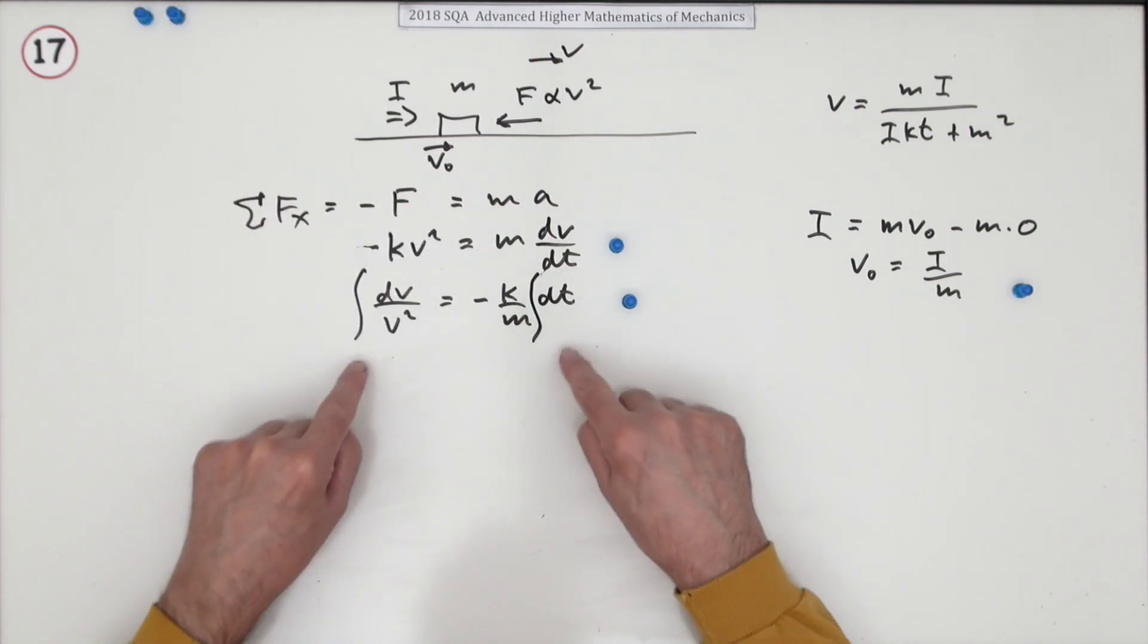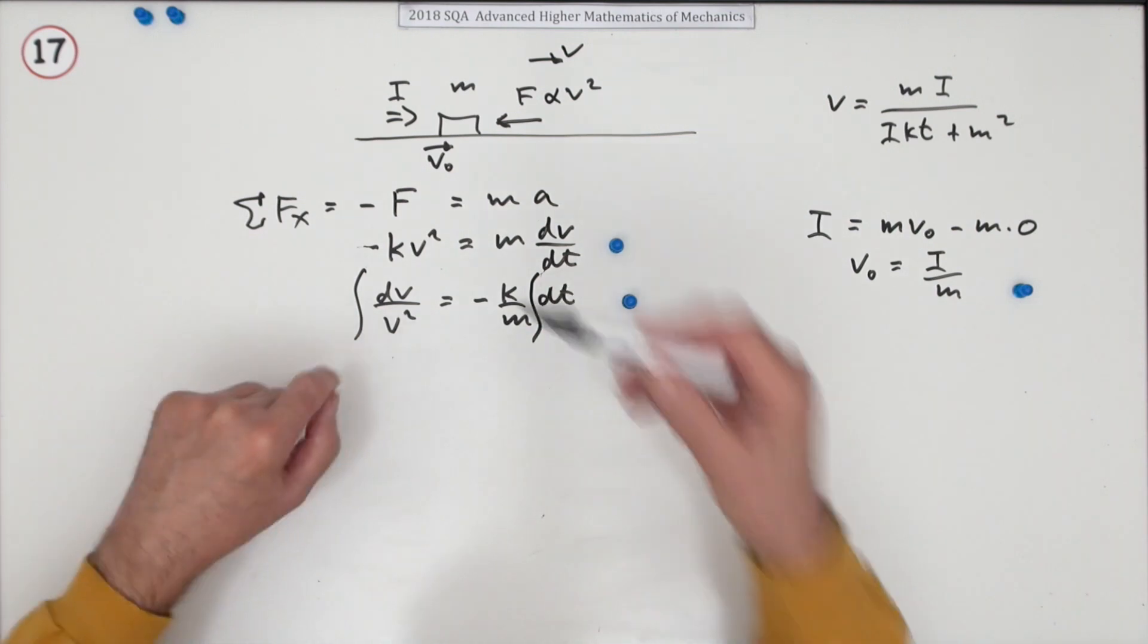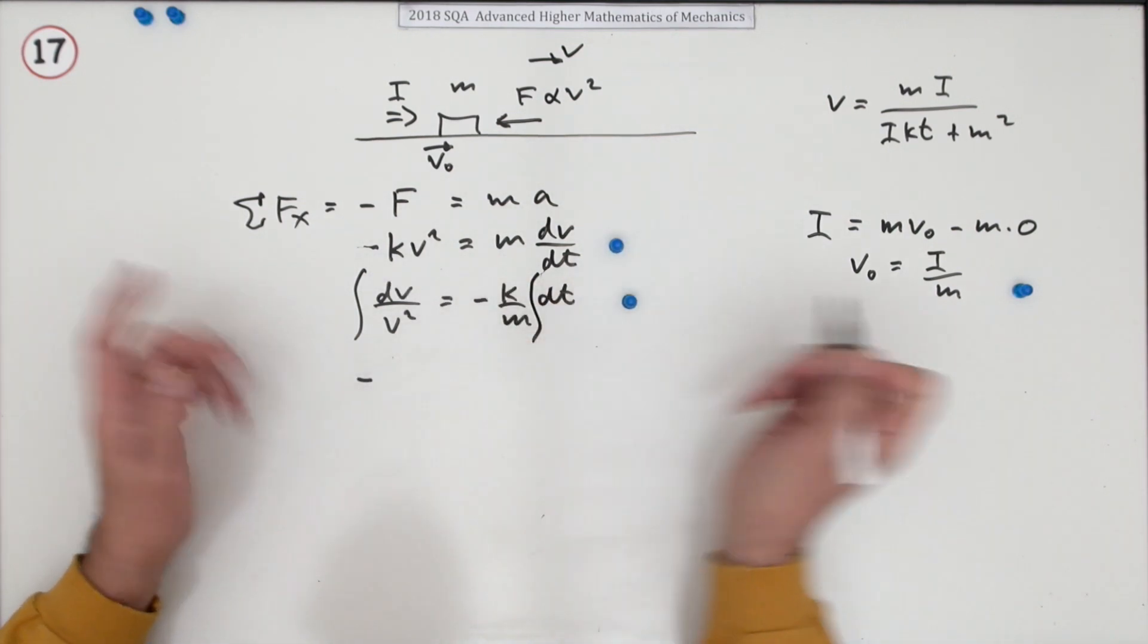Now putting in the initial conditions was worth a mark. And then getting the final result was worth a mark. Now if you didn't like incorporating the initial conditions into the actual integration, you could just have gone through the normal route of integrating and adding a constant.